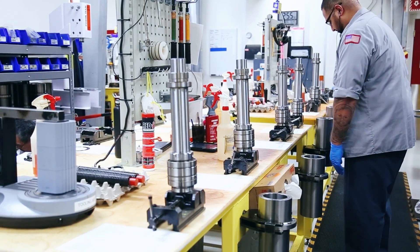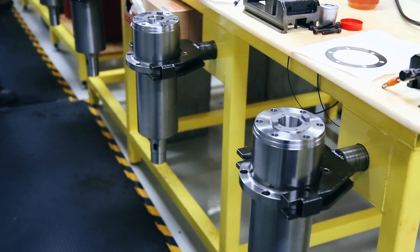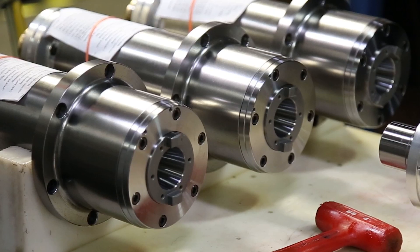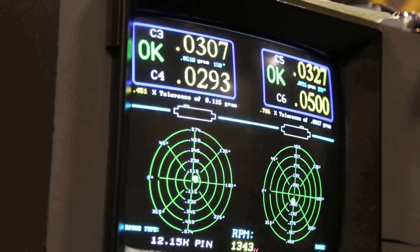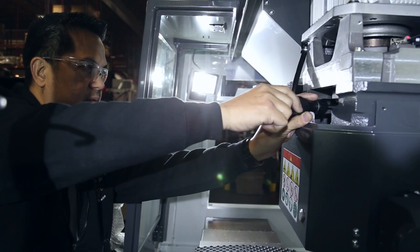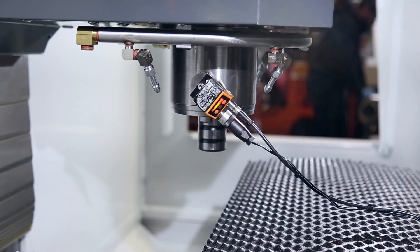An inline spindle goes through a two-step balancing process here at the factory. After assembly, they are balanced at a precision balancing station. Then after the spindle is installed in the machine, it is final balanced before inspection.